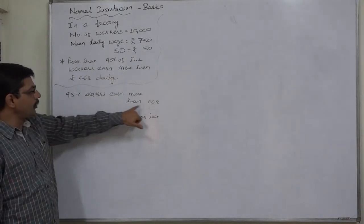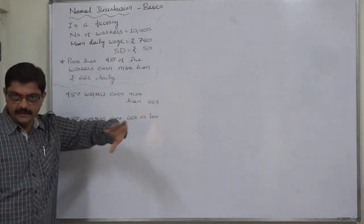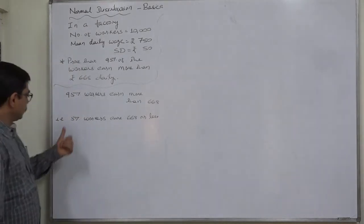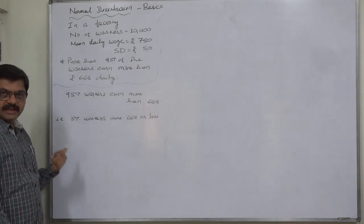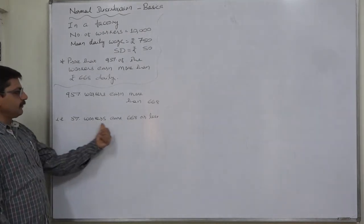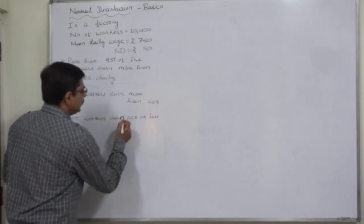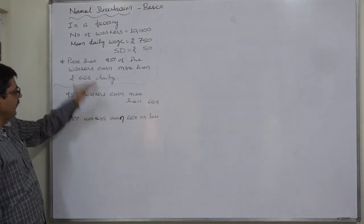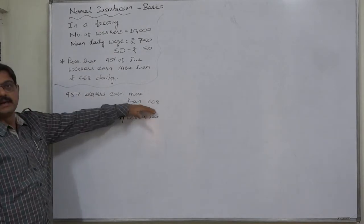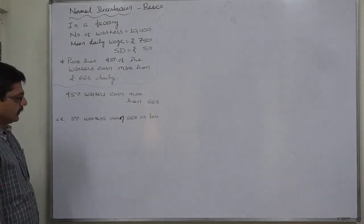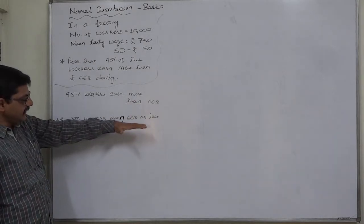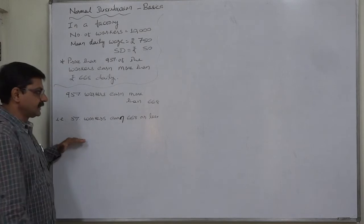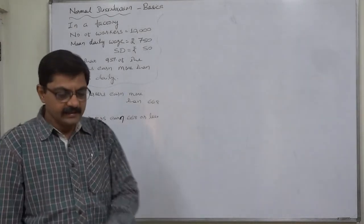The statement is 95% of the workers earn more than 668 daily. We know that total is always 100%, so another meaning of the same statement can be: 5% of workers earn 668 or less, because then only the remaining 95% can earn more than 668.